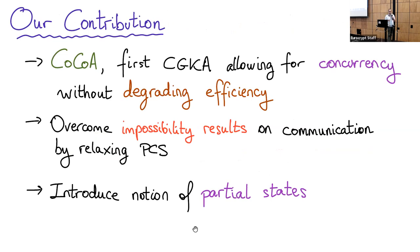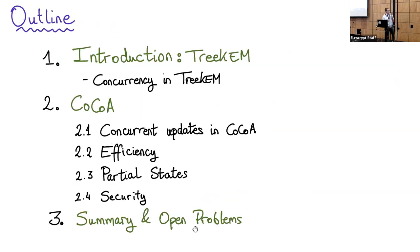This brings us to our contribution: a new protocol, COCO, a new CGKA that allows for concurrent key rotations that do not degrade the efficiency of the protocol. In particular, our protocol overcomes previous impossibility results on the communication of such concurrent protocols by relaxing the requirement on post-compromised security. We also introduce the notion of partial states, which allows us to decrease the recipient communication. During this talk, I will give an introduction to TreeKEM, discuss how concurrency in TreeKEM looks, then tell you about our protocol — concurrency handling, efficiency, partial states, and security — before introducing a couple of open problems.